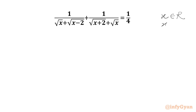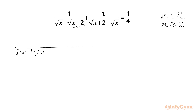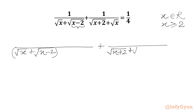So x should be greater than or equal to 2, as we have radicand x minus 2 here. Now we will rewrite our equation once. We will write here square root x plus square root x minus 2, and in the denominator we will write square root x plus 2 plus square root x.